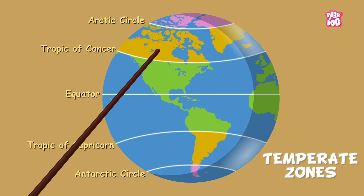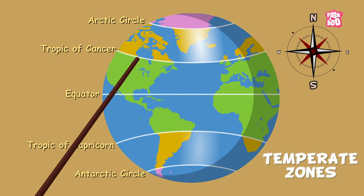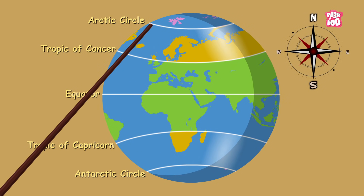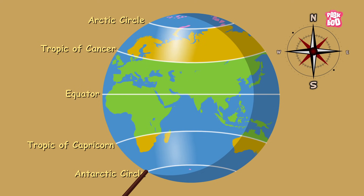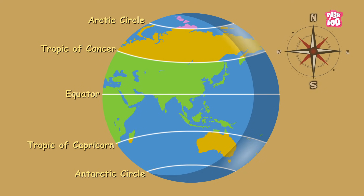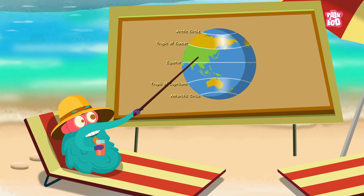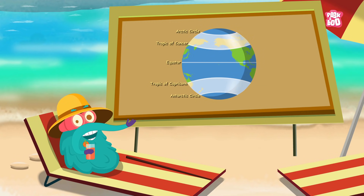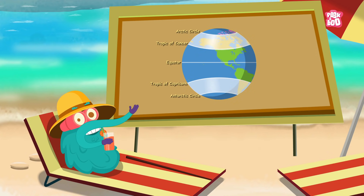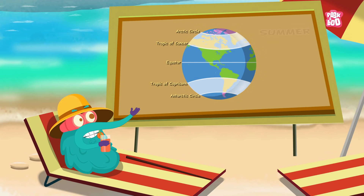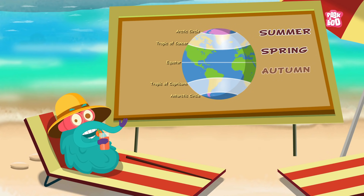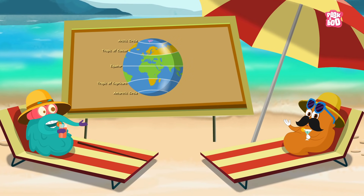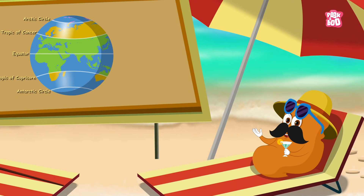Next are the temperate zones, which fall between the two tropics and the Arctic Circle in the north, and the Antarctic Circle in the south respectively. This is the perfect vacation zone as it usually has mild temperatures and enjoys all four seasons annually — Summer, Spring, Autumn and Winter. This is because in these regions the sun is never directly overhead.